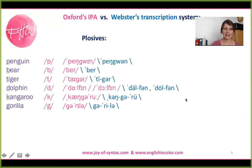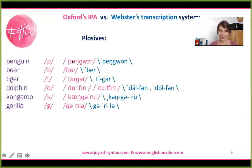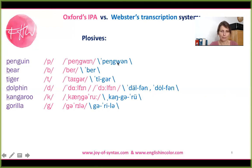Let's move on to consonants. Plosives are easy. The same symbol is used in British, American, and German, and by both the IPA and Webster's transcription system: penguin, bear, tiger, dolphin, kangaroo, gorilla. The differences here only pertain to differences in vowel representation.